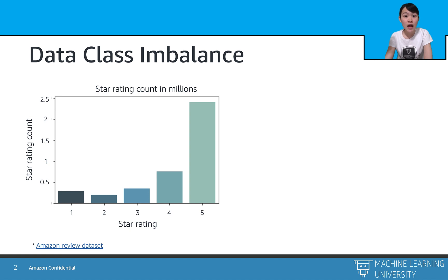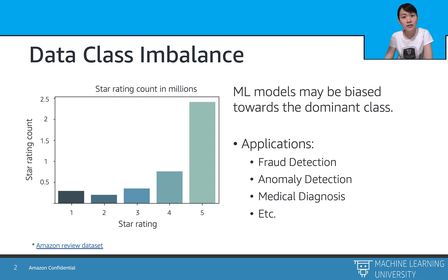Here is an example of the Amazon review dataset, which is a large collection of commodity ratings from Amazon customers. As we can see from the plot, the number of five-star reviews almost equals the total of the other four types of star reviews combined. So if we use this dataset directly to train a machine learning model, the model's prediction will definitely be biased towards the dominant class. Other applications such as fraud detection and medical diagnosis also suffer from similar imbalanced dataset problems.